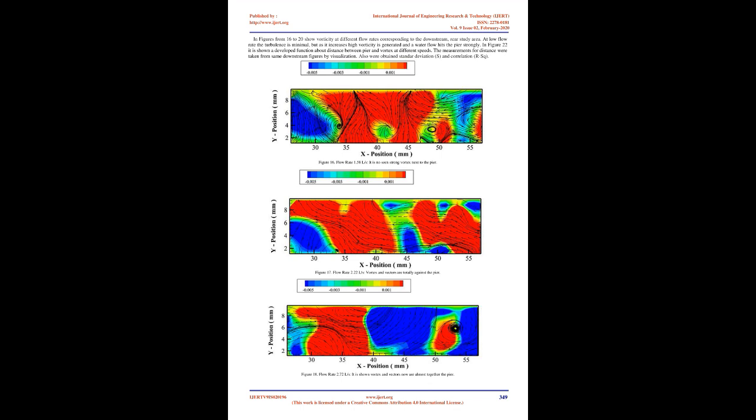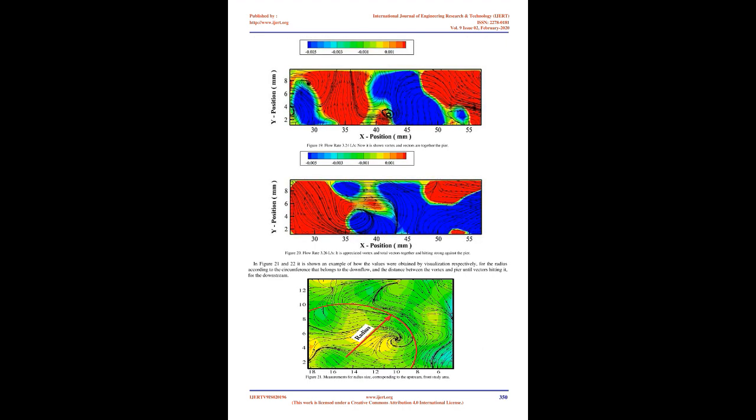Figures 11 to 15 show vorticity at different flow rates corresponding to the upstream frontal study area. At low flow rate, the water flow is returned when it hits the pier, which is known as retro flow, and there is a tendency to go to the bottom. As the flow rate increases, the flow tends to go linearly over the pier. Figure 21 shows a developed function about radius size generated by retro flow at different speeds. The measurements for radius size were taken from upstream figures by visualization, and standard deviation S and correlation R² were also obtained.